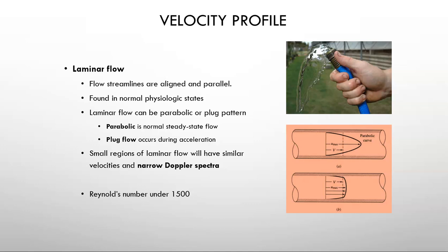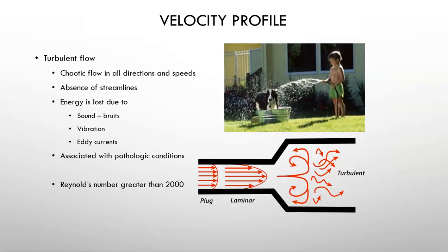Laminar flow produces a Reynolds number under 1500. The Reynolds number is a unitless number — under 1500 is laminar flow, and over 2000 is turbulent flow. Turbulent flow is chaotic flow in all directions and speeds with no streamlines. A great amount of energy is lost in turbulent flow due to inertial losses, eddy currents, and sound created by vibration. Turbulent flow in the human body is usually associated with a pathologic condition called a critical stenosis.